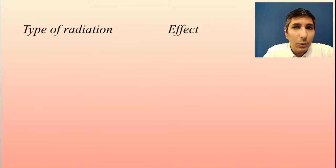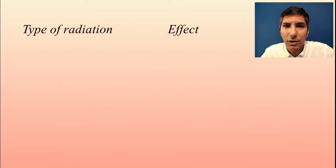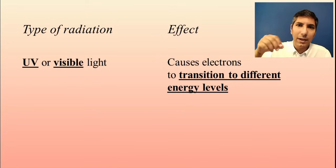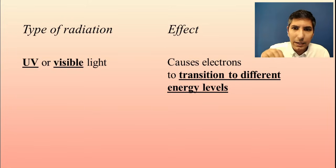Now, we need to realize also that different types of radiation have different effects on atoms and molecules. For example, if you have ultraviolet light or even visible light, that causes electrons to jump or transition to different energy levels. And so you may have what is actually called a quantum leap when this happens. You have an electron, and it's energized by visible light or ultraviolet light. It literally causes electrons to jump to different energy levels. It causes them to transition.